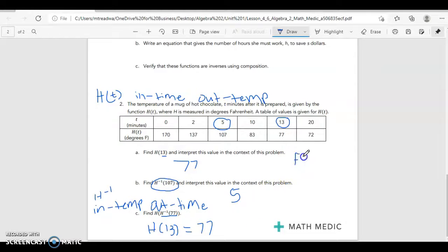Remember F of G of X should give you X. If F and G are inverses, in this case our X is 77. When I took the composition of my inverse I got that same input 77. And that should help you get started on your homework and be successful on the quiz.